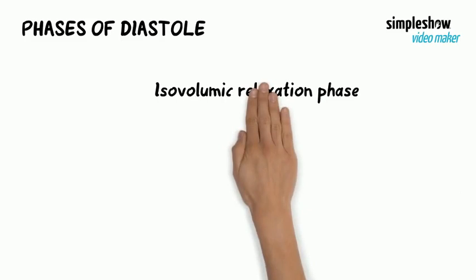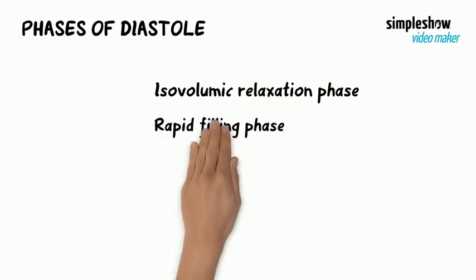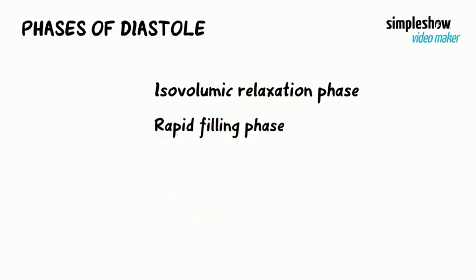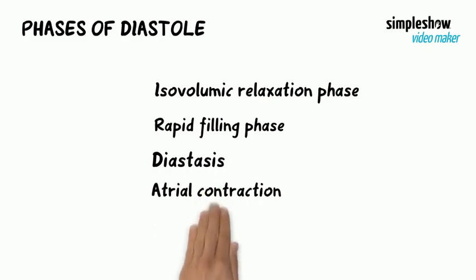The different phases in diastole are: the isovolumic relaxation phase, the rapid filling phase, diastasis, and atrial contraction.